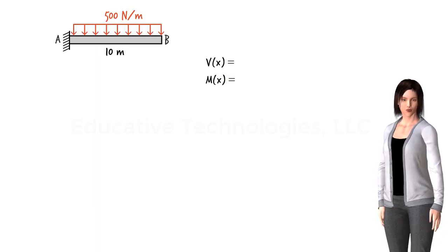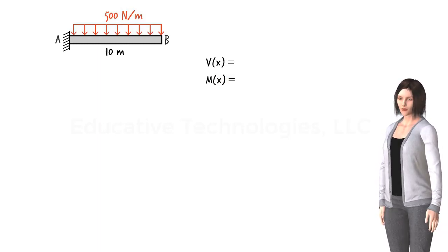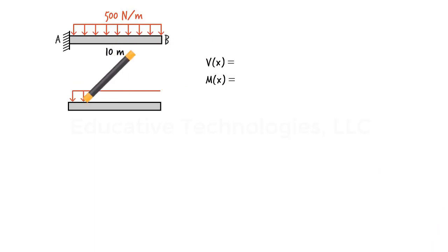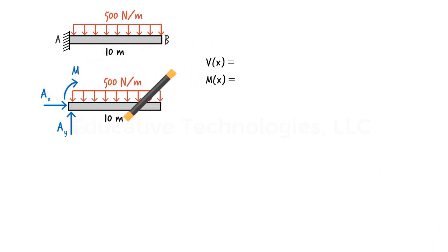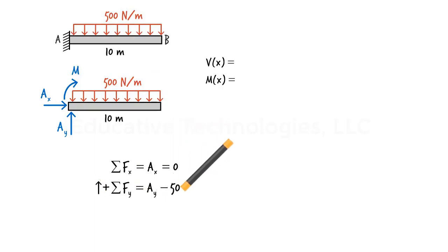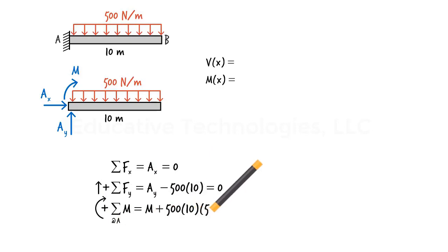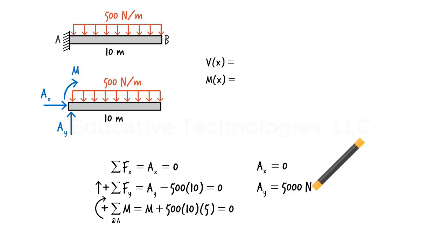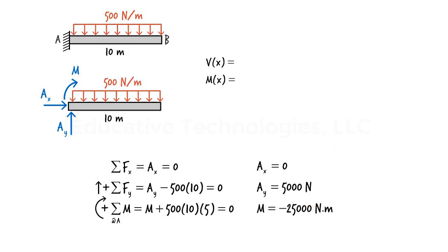To do this, let's find the support reactions. Here is the free body diagram for the beam, along with the equilibrium equations. Solving for the unknowns, we get Ax equals 0, Ay equals 5000 newtons, and M equals negative 25,000 newton meters.